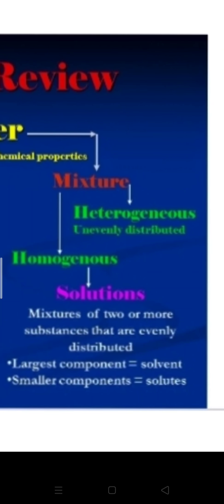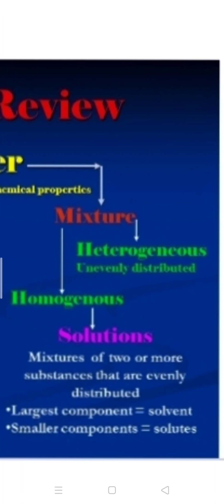Now, the impure or mixture. Mixture may be heterogeneous or homogeneous. Heterogeneous mixtures are unevenly distributed. For example, iron nail in sand and sand in water are examples of heterogeneous mixture.